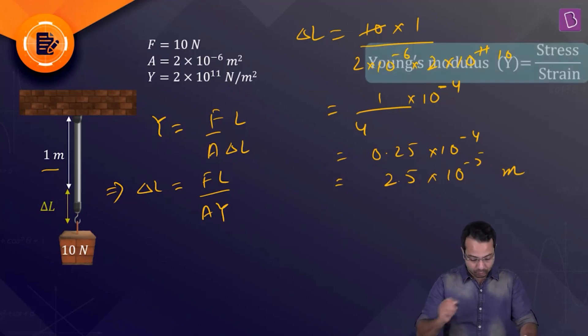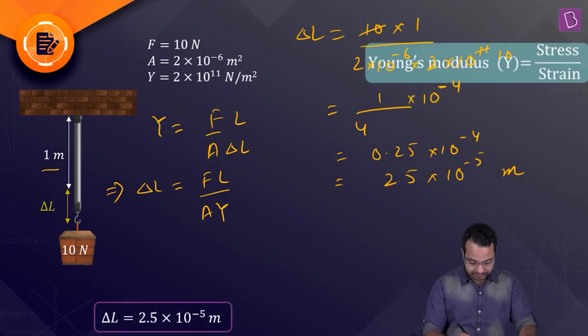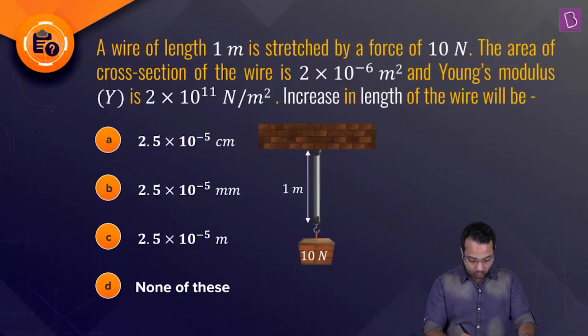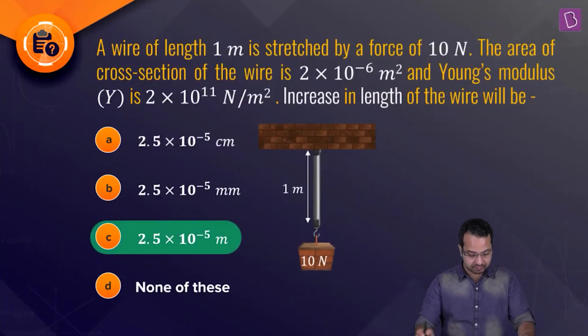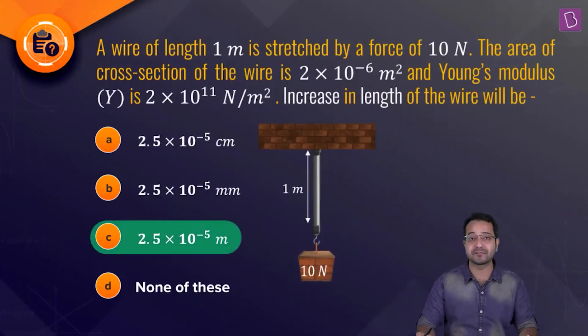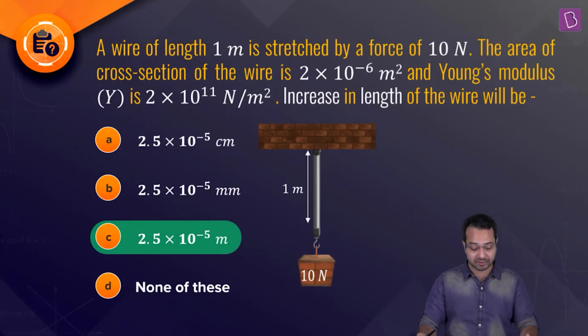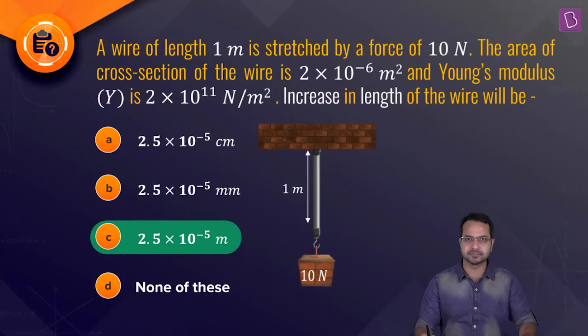Looking at the options, option C, 2.5×10⁻⁵ m, is the correct answer.